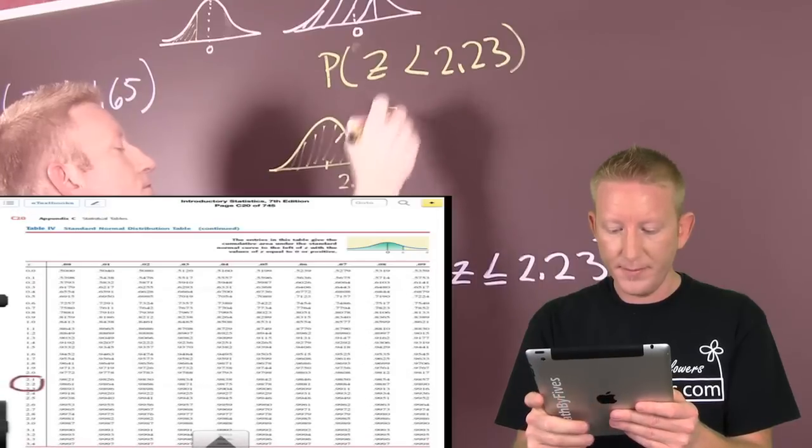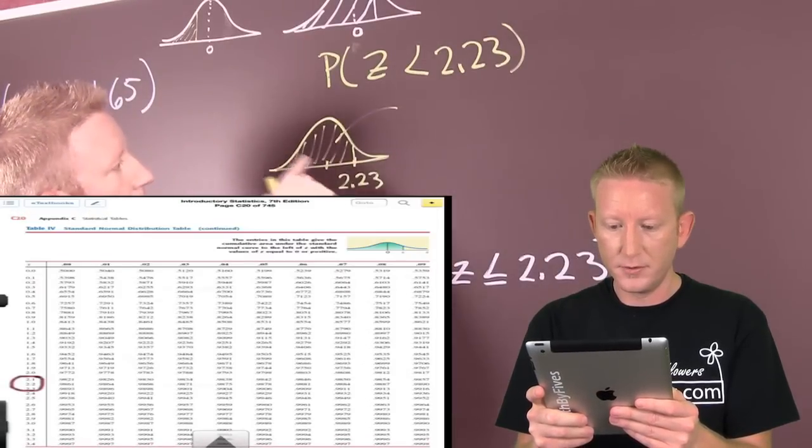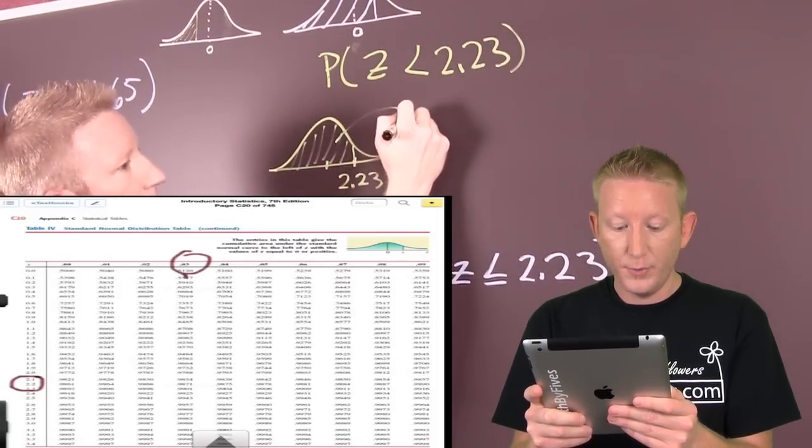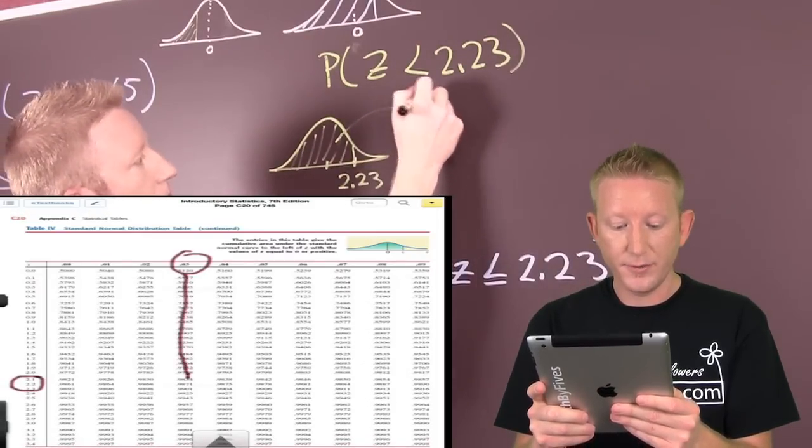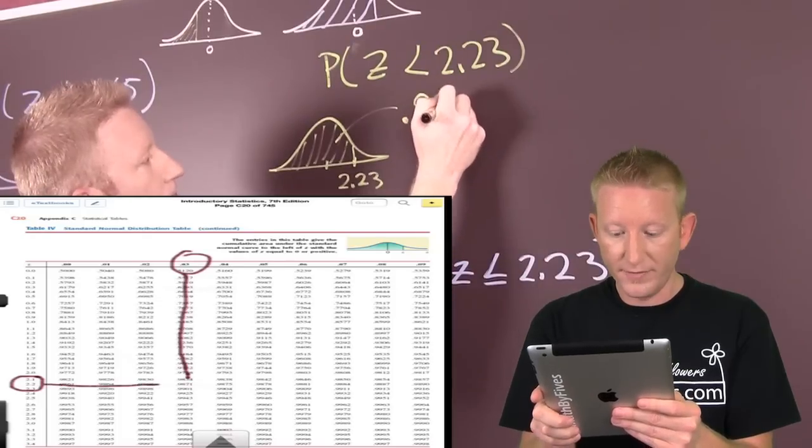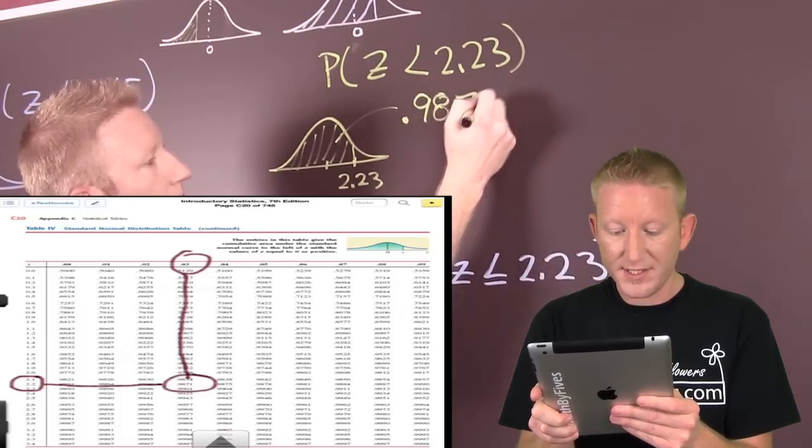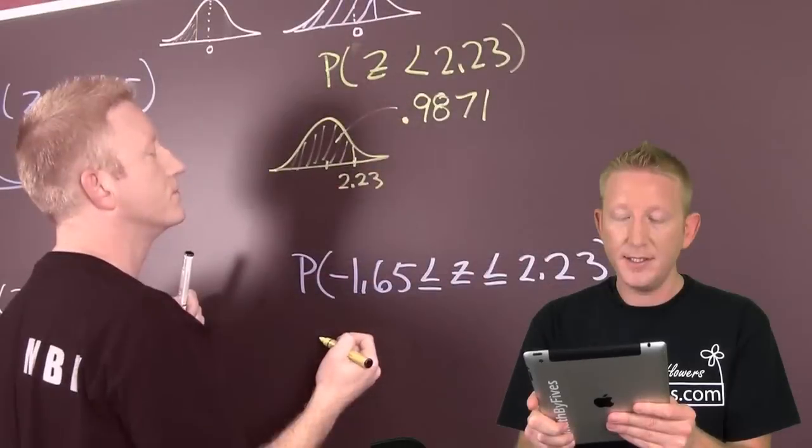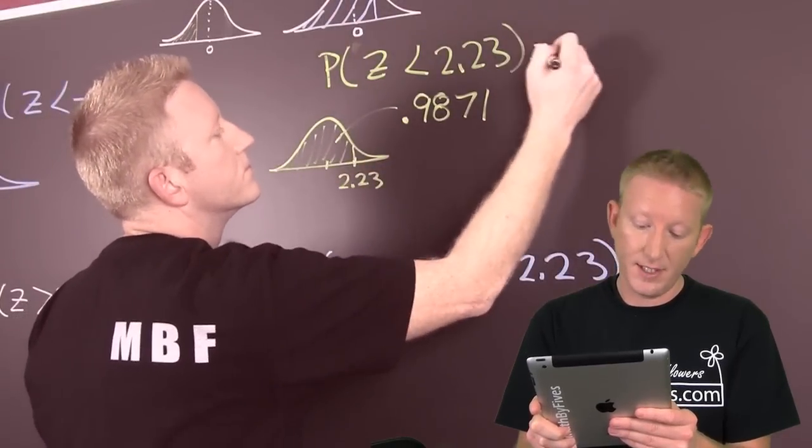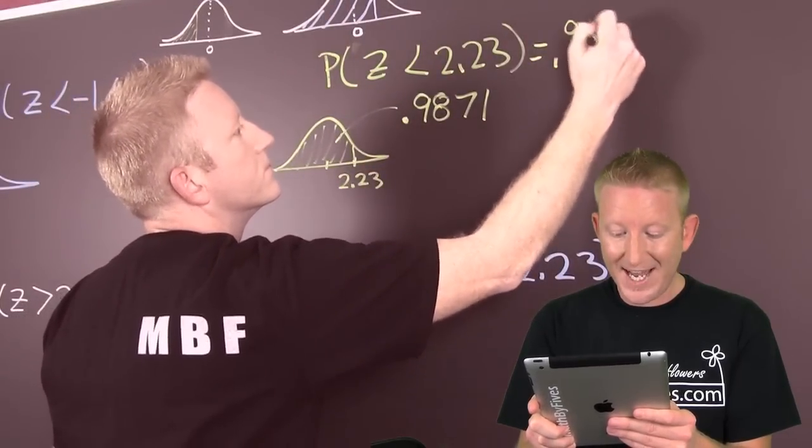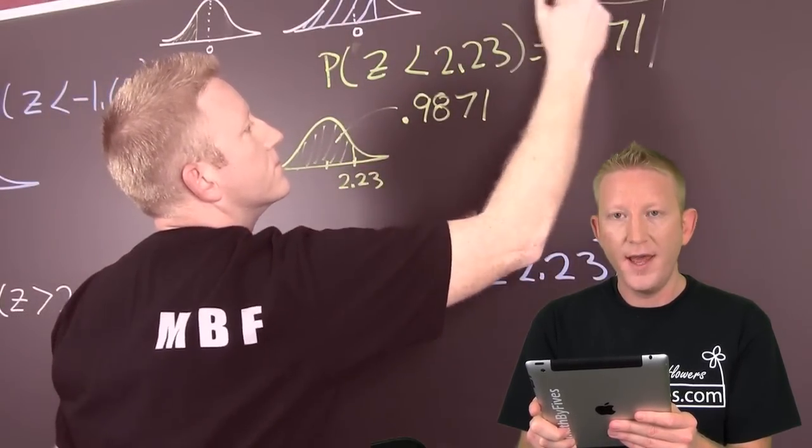So we go down to 2.2 and then we go over to 0.03, and we see the probability that our values are going to be less than that is 0.9871. That's fun.